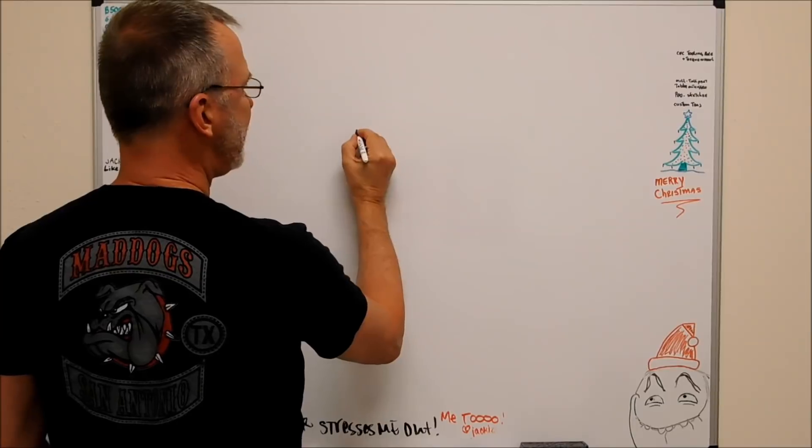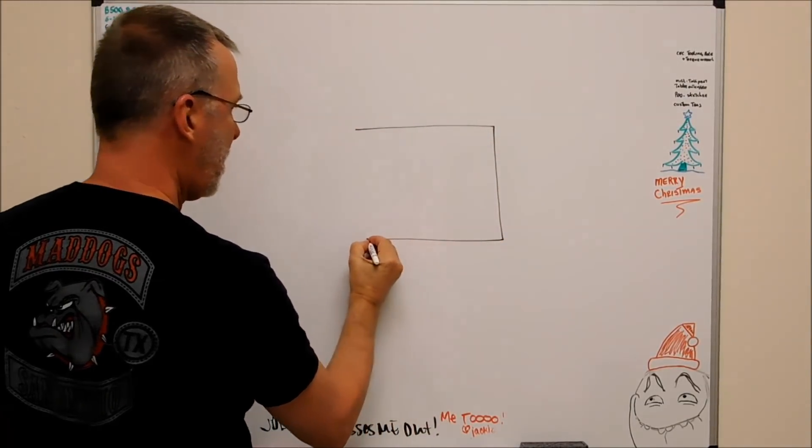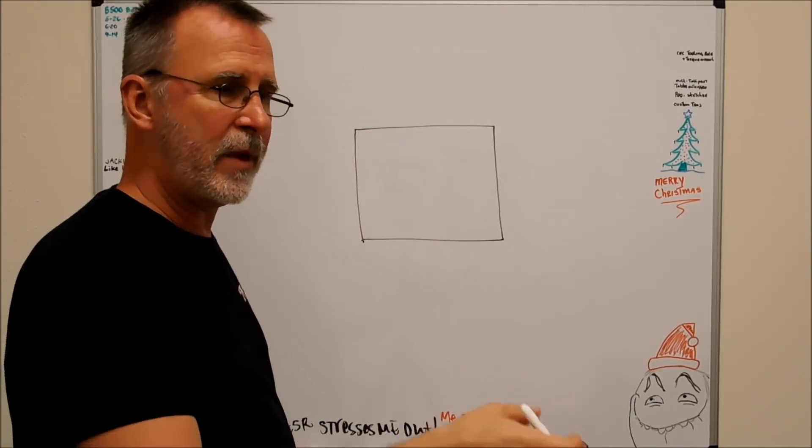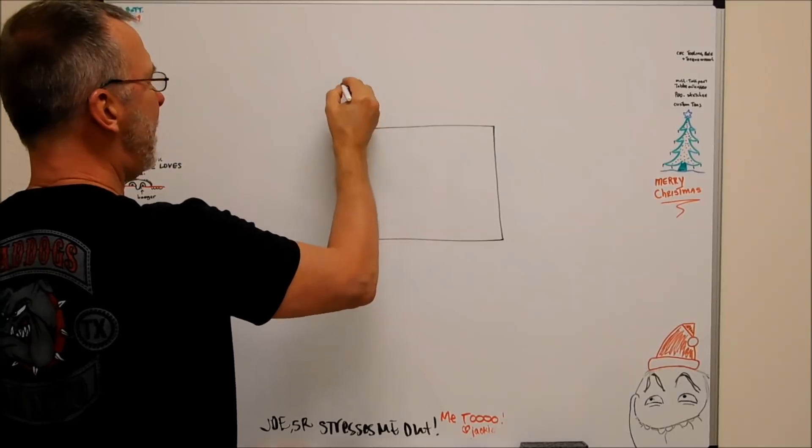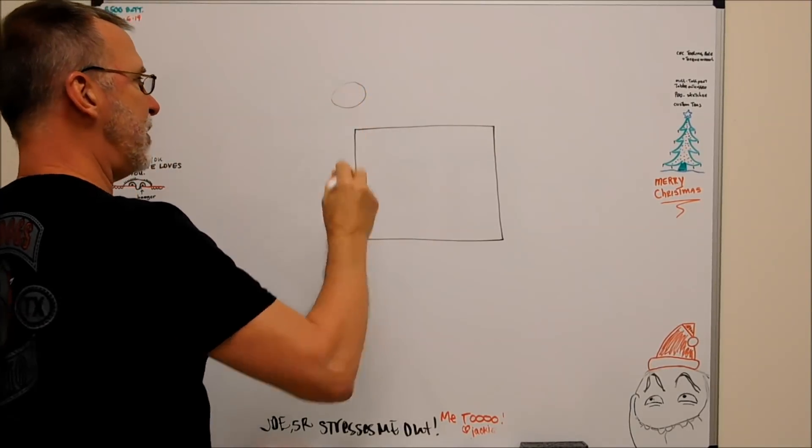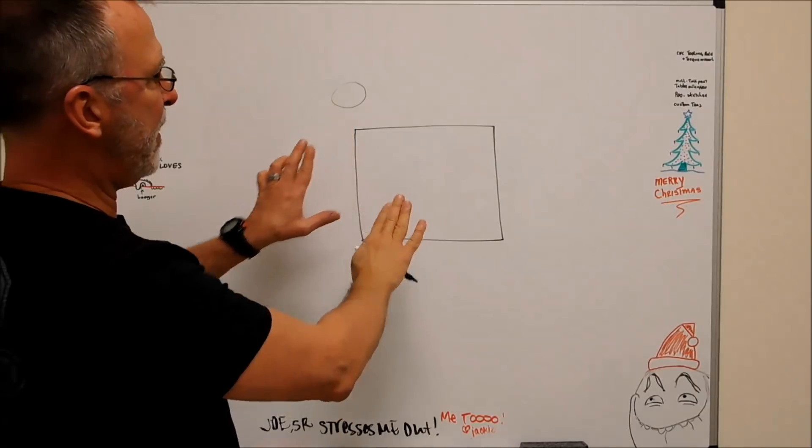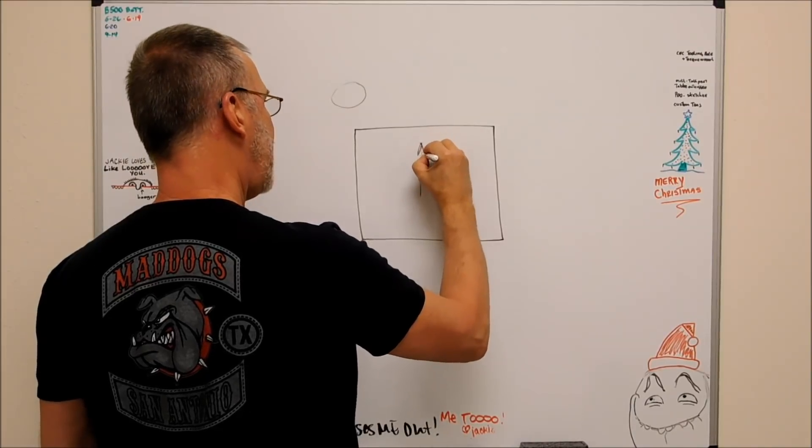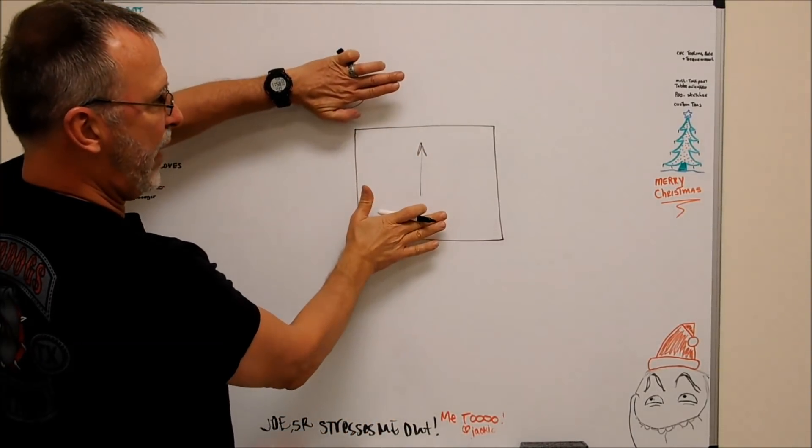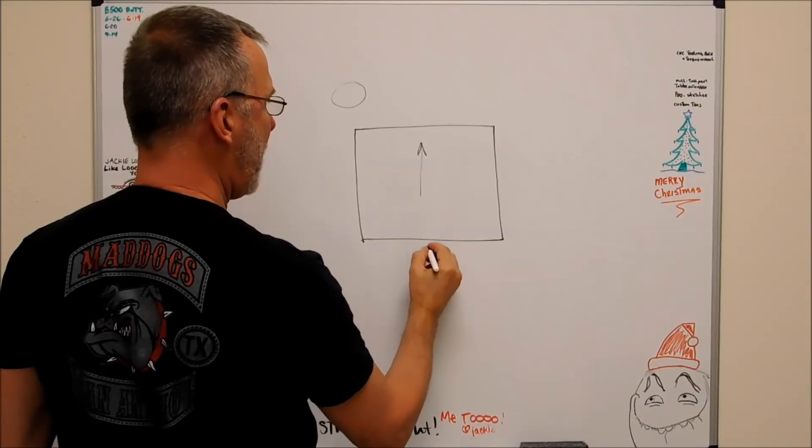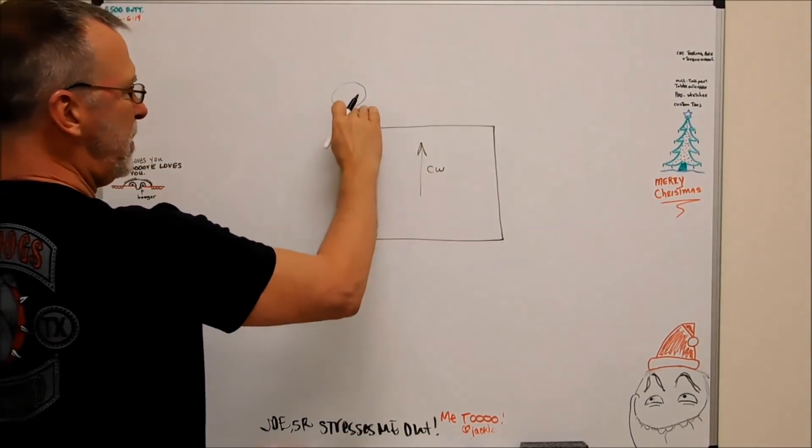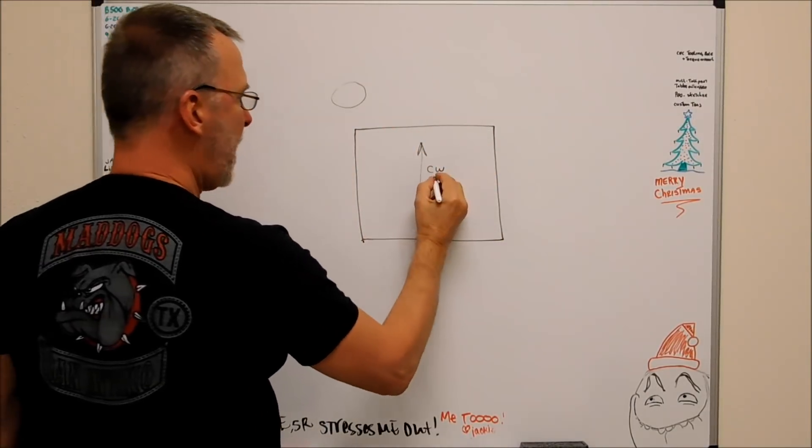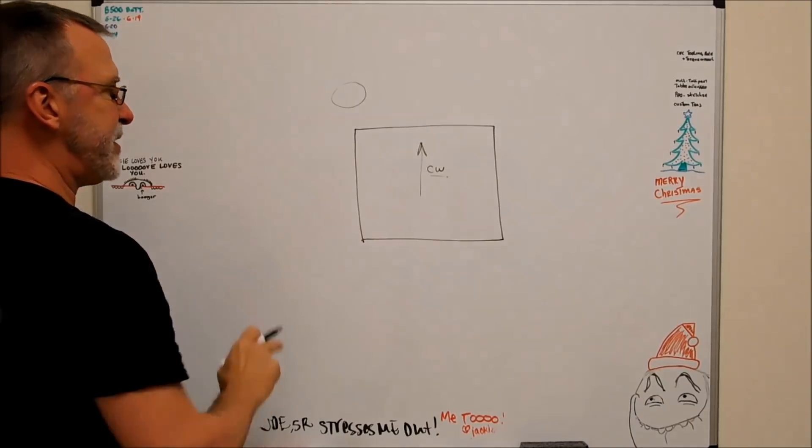Let's look at this. You have a part in your machine, and you have your edge finder in your spindle. Looking down the spindle. Now, when you find the edge of your part, you're cranking the block into the edge finder. You're going clockwise, right? You hit the edge, you move in, you've got your zero, still clockwise.